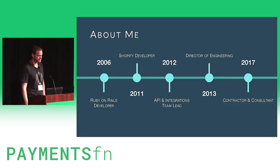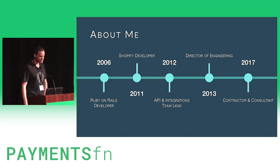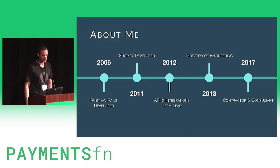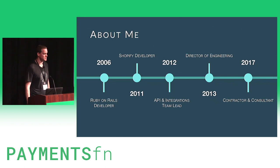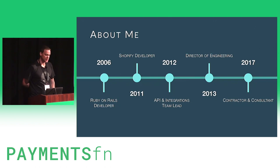First, a little bit about me. I'm mainly a Rails developer, but I like using Go and Swift as well. I worked at Shopify from 2011 to 2017, where I worked as a developer on product and led teams that handled APIs, payments, and data. In 2017, I decided to leave Shopify, and now I'm a contractor still mostly doing Rails and advising engineering teams.